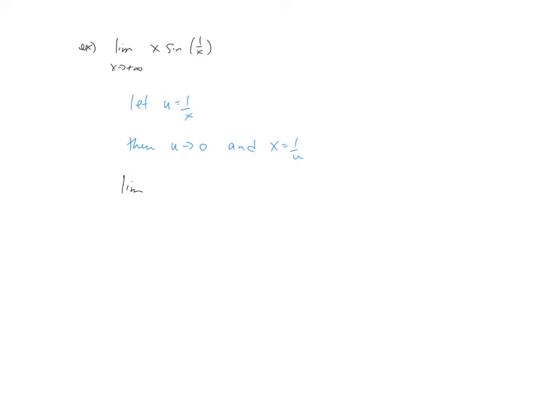So our limit would be as u goes to 0, my x is 1 over u, my sine of u now. And you can hopefully see and remember that limit as u goes to 0 of sine u over u would equal 1.